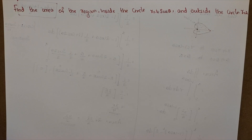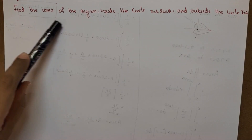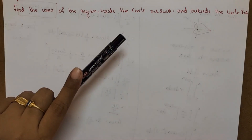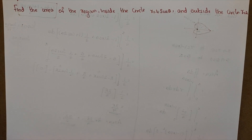We have a few questions about how to find the area. This is the area — we have a cardioid area. Find the area of the region inside the circle r equal to 4 sin theta.